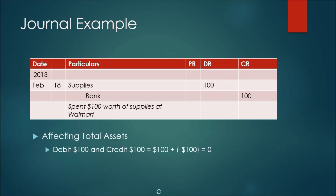Here's a journal example. Supplies is debited by $100, meaning it goes up, and the bank is credited by $100, meaning it goes down. The total assets remain the same because $100 plus negative $100 equals zero, so assets don't change. Debit and credit are balanced. In these examples it's because owner's equity isn't being changed, but in future examples owner's equity will be modified so that the journal will stay balanced.